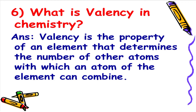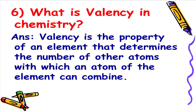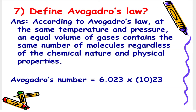Next: What is valency in chemistry? The answer is valency is the property of an element that determines the number of other atoms with which an atom of the element can combine. Next: Define Avogadro's law. According to Avogadro's law, at the same temperature and pressure, an equal volume of gases contains the same number of molecules regardless of their chemical nature and physical properties.